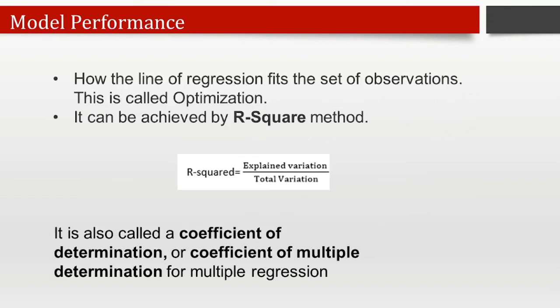Now, model performance. The goodness of fit determines how the regression line fits the set of observations. The process of finding the best model out of various models is called optimization, and it can be achieved by the R-squared method. R-squared is a statistical method that determines the goodness of fit. It measures the strength of the relationship between dependent and independent variables on a scale of 0 to 100%. A high value of R-squared indicates less difference between predicted and actual values, representing a good model. It is also called the coefficient of determination.